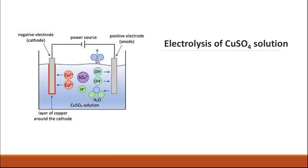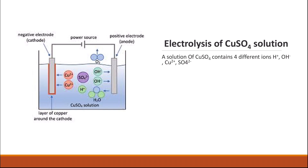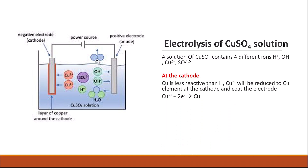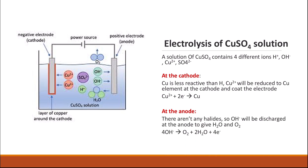For example, in copper sulfate solution, we have four ions: hydrogen, hydroxide, copper, and sulfate. At the cathode, copper is less reactive than hydrogen, so copper is reduced and coats the cathode electrode. At the anode, there is no halide — only sulfate and hydroxide — so hydroxide is oxidized at the anode, giving oxygen and water.